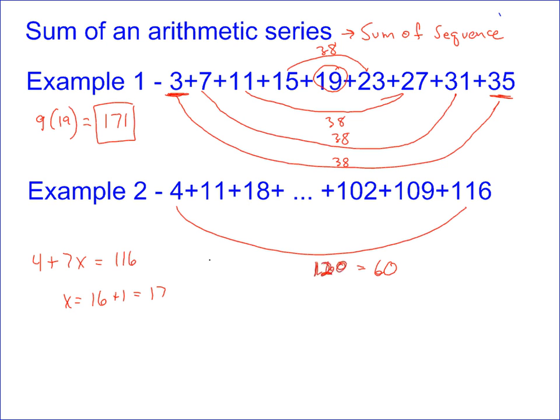So there are 17 numbers that have an average of 60, and so your sum is going to be 1020. The solution to example 2 is 1020.